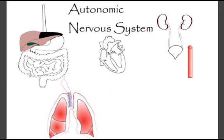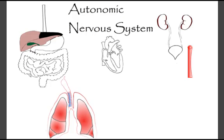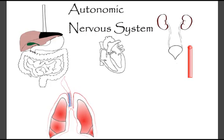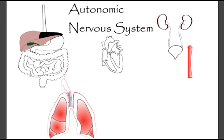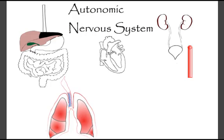The autonomic nervous system involuntarily modifies the activity of smooth muscles, exocrine glands, cardiac tissue, and certain metabolic activities.